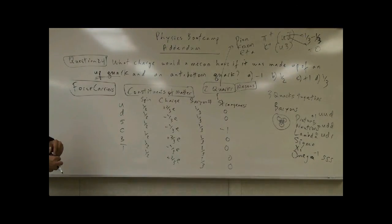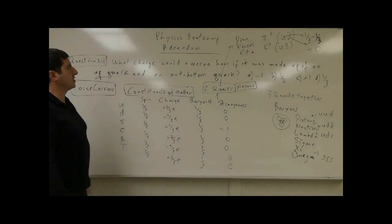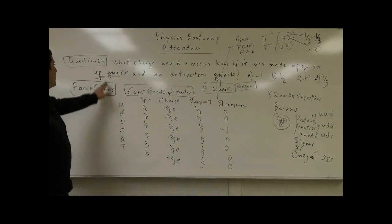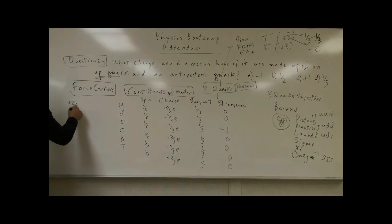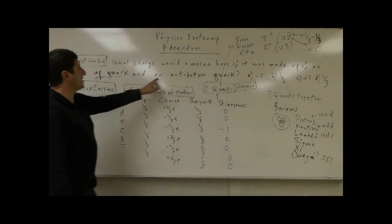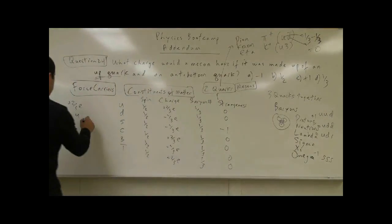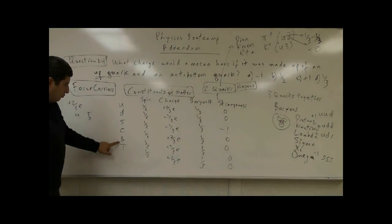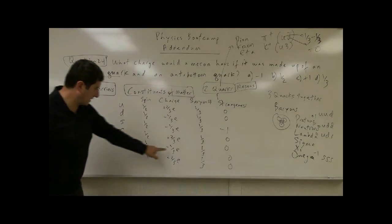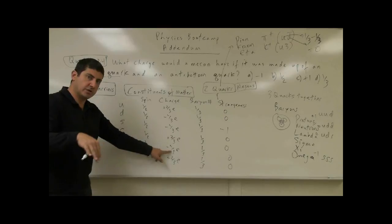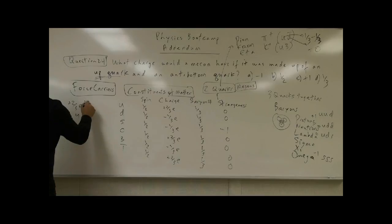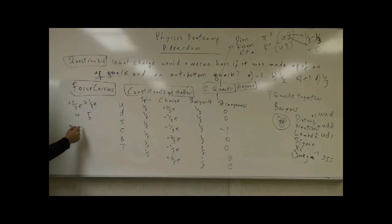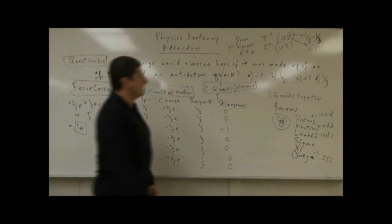So now let's look at this question — now we are ready to analyze. What charge would the meson have if it was made up of an up quark and an anti-bottom quark? Well, the up quark has a charge of plus two-thirds e. And the anti-bottom: the bottom quark has a charge of negative one-third e, so the anti-bottom would have the opposite property — positive one-third e. Two-thirds plus one-third gives you one e. So the charge would be positive one e.